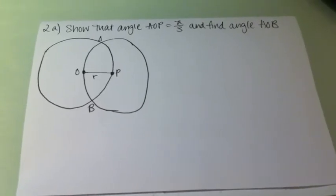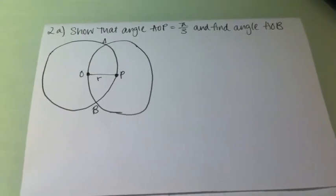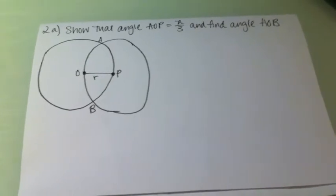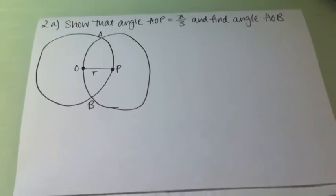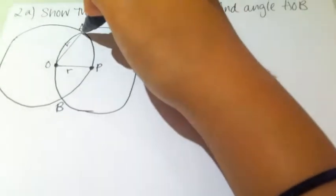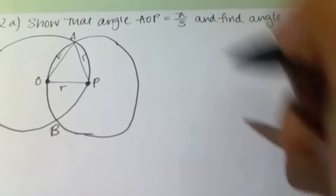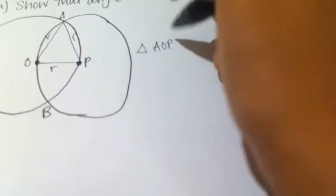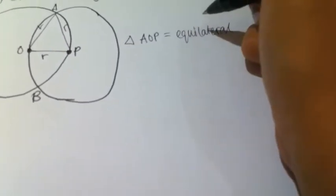For question 2a, I have to show that angle AOP equals π/3. We know that the distance between O and P is radius r, and that each circle lies on the circumference of the other, which means that AO is r, and that AP is also r. This means that triangle AOP is an equilateral triangle.